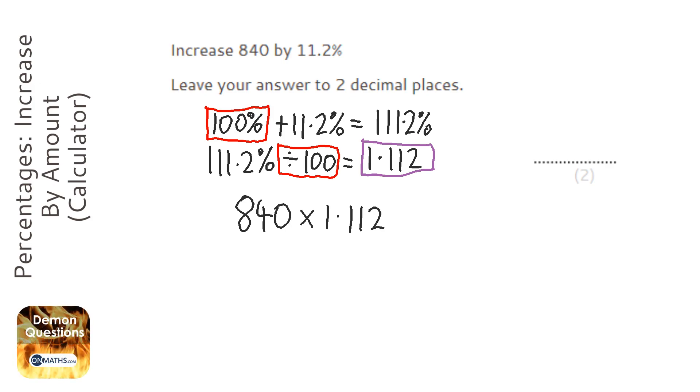us. So I'm going to get my calculator now. 840 times 1.112 and it gives me the answer of 934.08. Now it says it wants it to two decimal places. This already is two decimal places, so this works out perfectly.